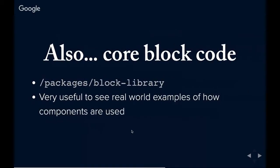If you're really stuck or if you love real-world examples like I do, you can also take a look at all the core block code. If you want to see how the list block was coded and write something similar, you can go into the block library under packages. There's a lot of documentation in there, but there's also all the code for all of the out-of-the-box blocks. You can dissect how one of the out-of-the-box blocks is coded and use that in your own code if that seems appropriate.